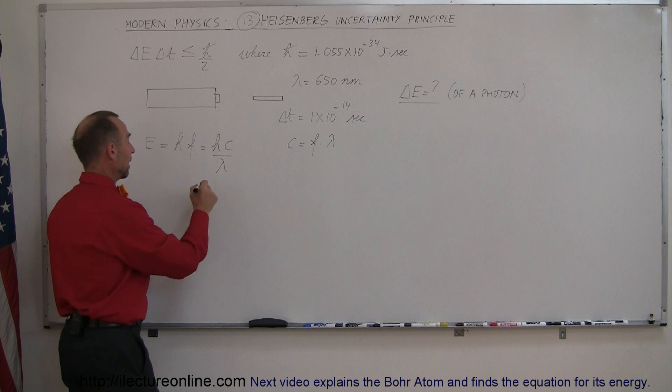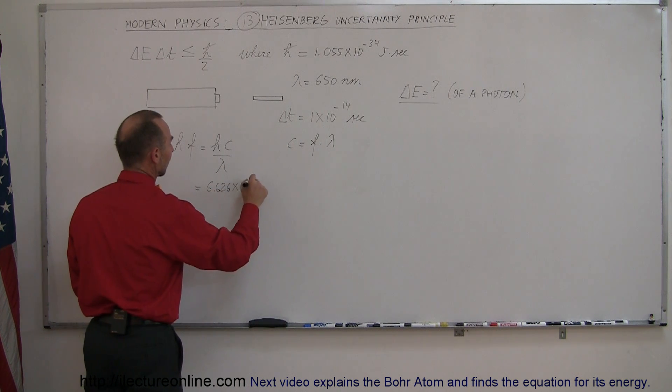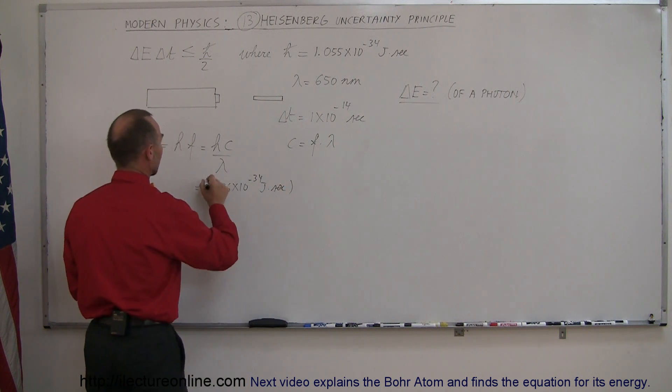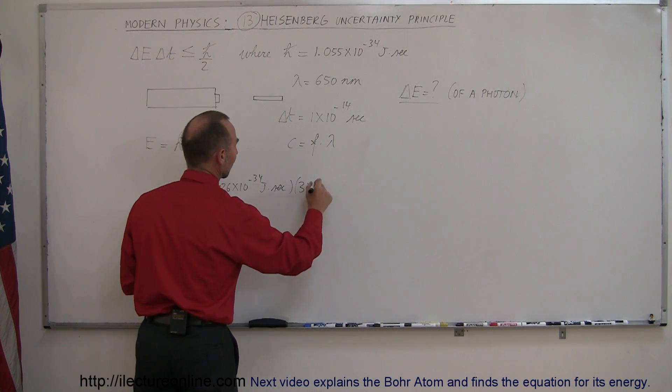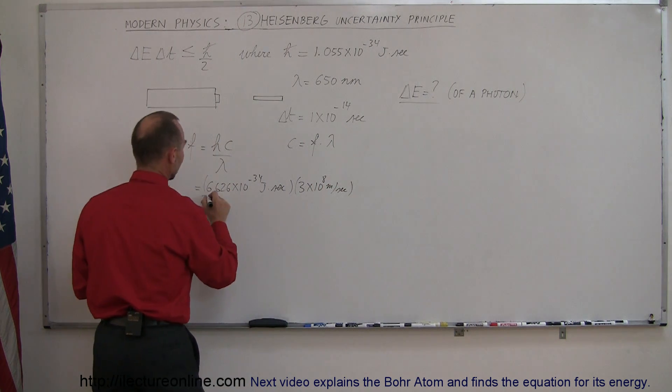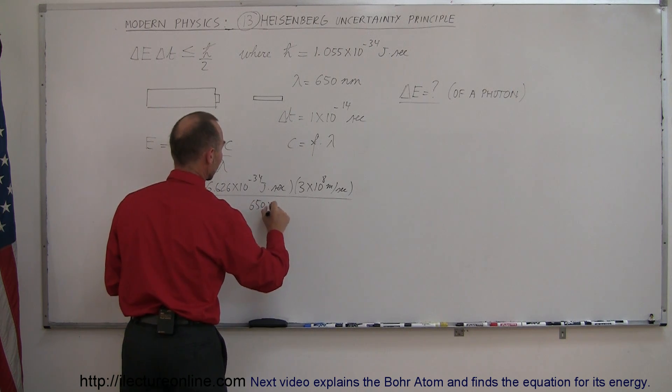And plugging in the numbers that we have, this is equal to 6.626×10⁻³⁴ joule-seconds, multiplied by the speed of light, 3×10⁸ meters per second, and then dividing all that by λ, which we said was 650 nanometers.